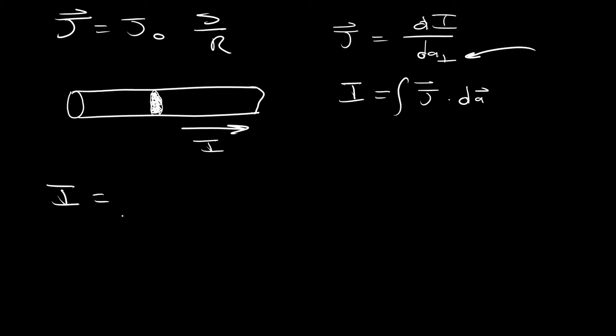So that makes our total current I equal to the integral 0 to 2π, 0 to R. R is just going to be our radius for the time being. We're going to hold the variable of our radius to be. And we're going to go J₀ S per R S dS dΦ.